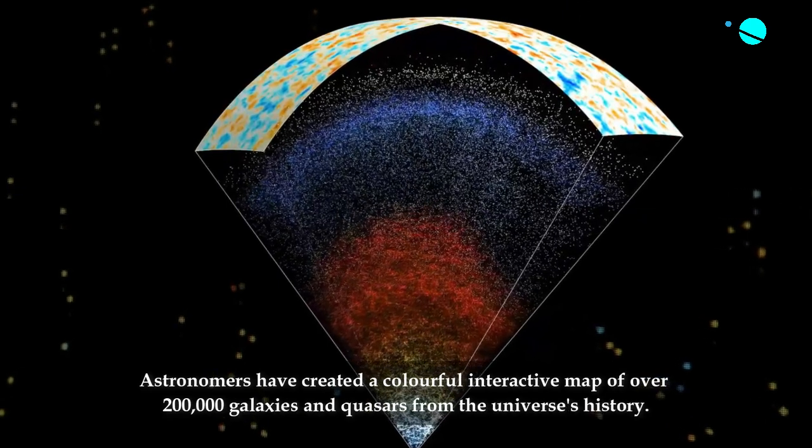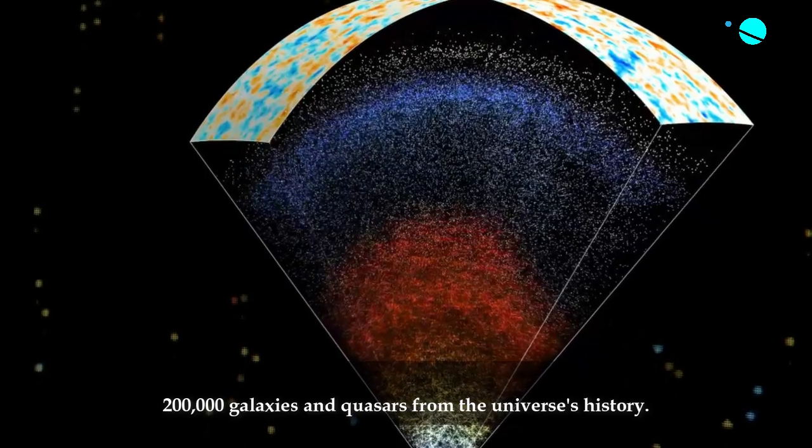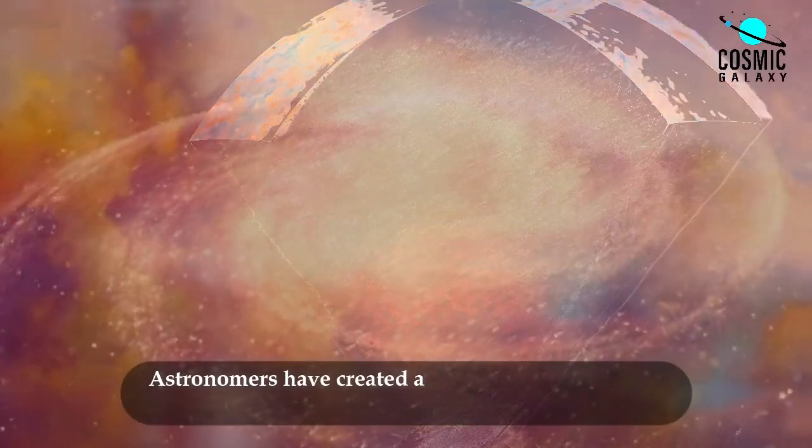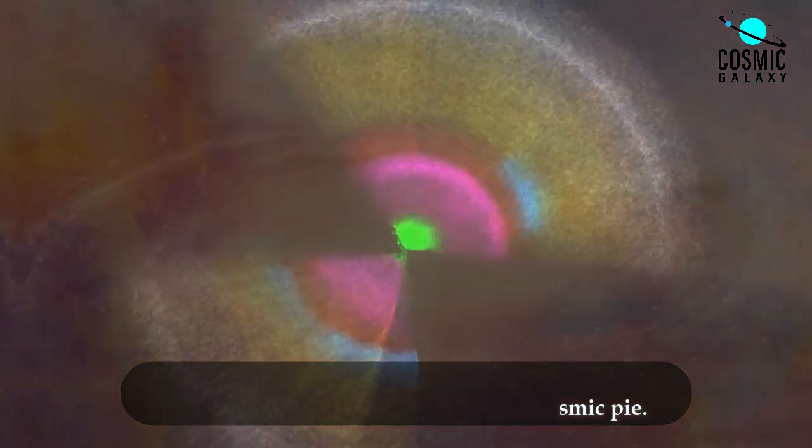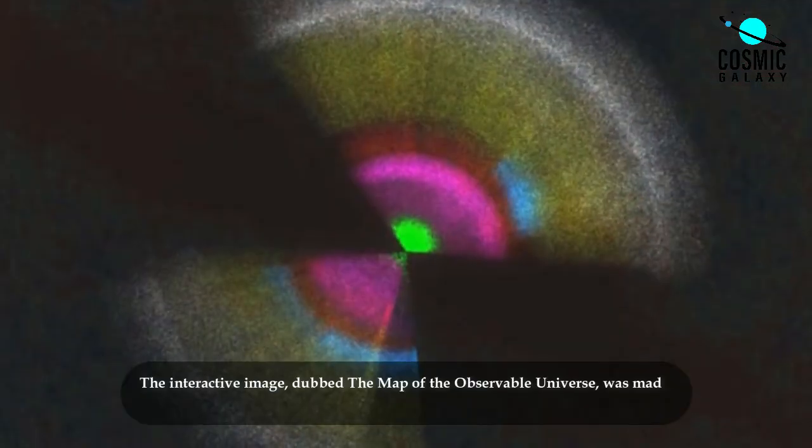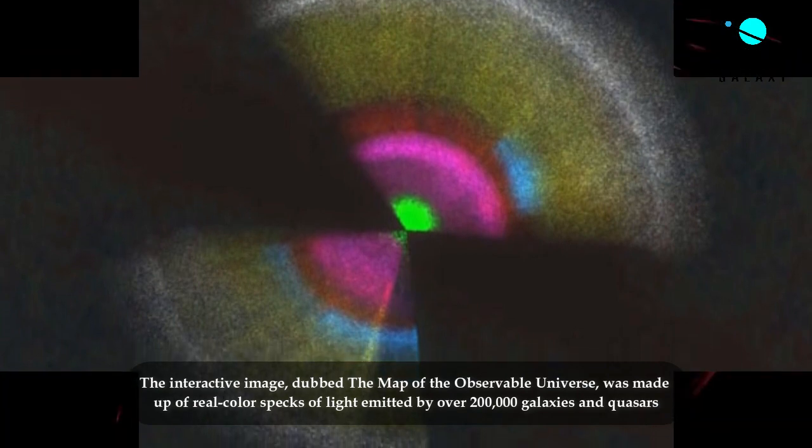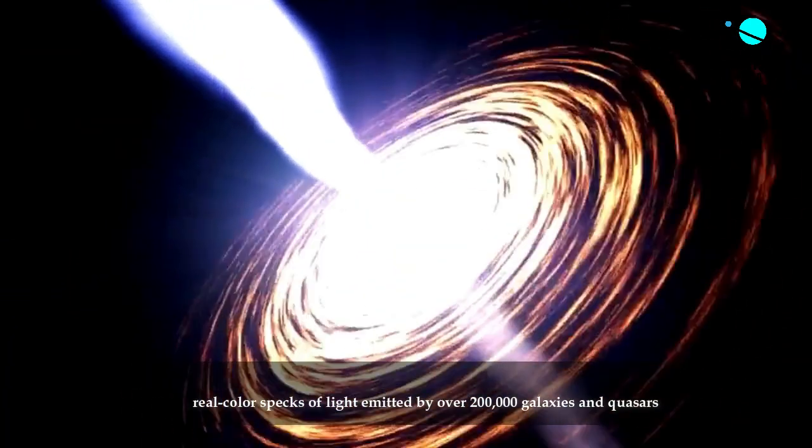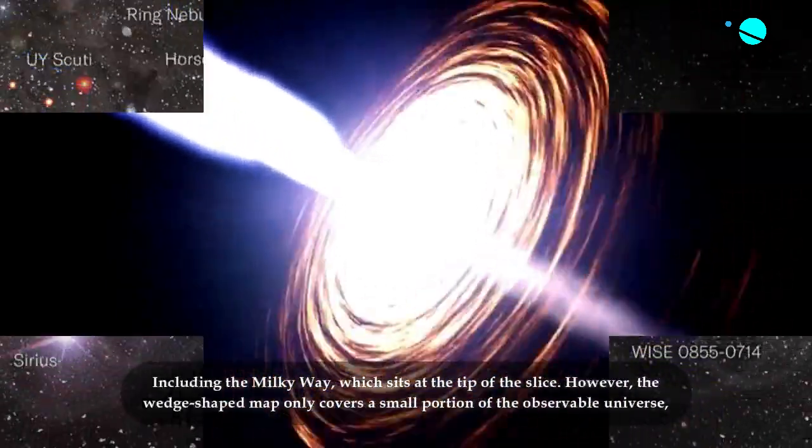Astronomers have created a colorful interactive map of over 200,000 galaxies and quasars from the Universe's history. The map resembles a rainbow-colored slice of cosmic pie. The interactive image, dubbed the Map of the Observable Universe, was made up of real-color specks of light emitted by over 200,000 galaxies and quasars, including the Milky Way, which sits at the tip of the slice.